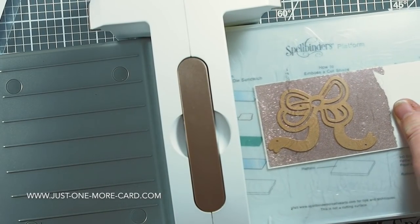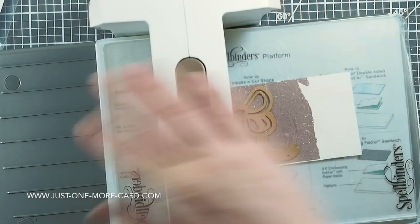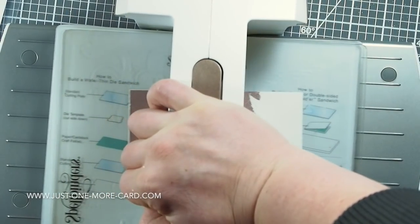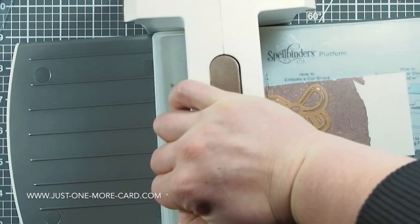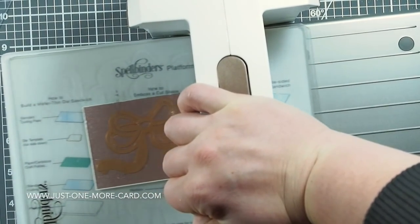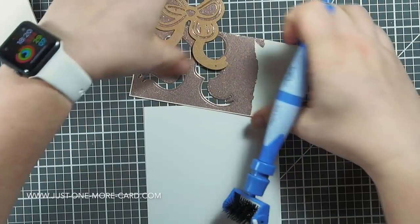I'm going to die cut the bow using the Spellbinders Platinum 6 die cutting machine, which was also sent to me by Spellbinders. It cuts just fine, but since I have this layer of adhesive, I like to run it through like three times, just to be sure.